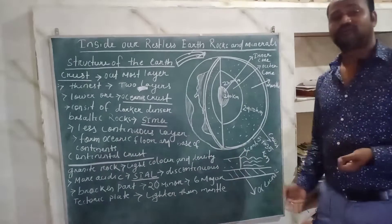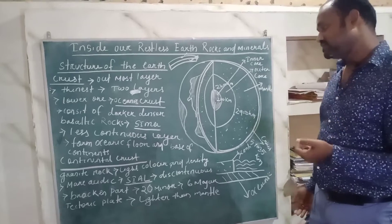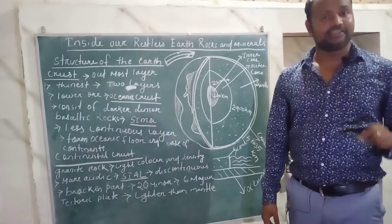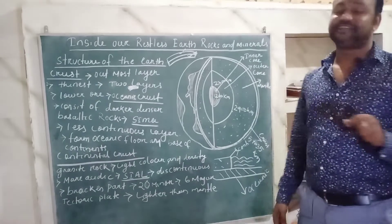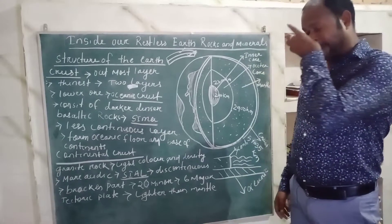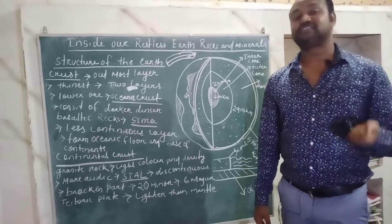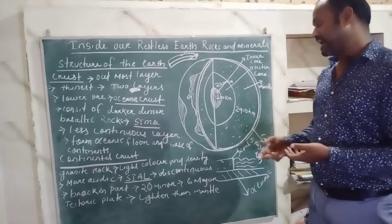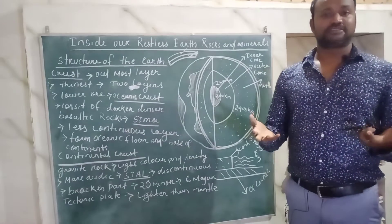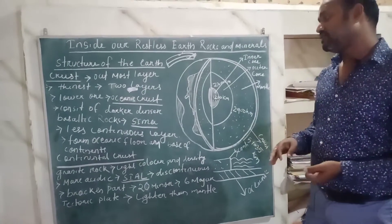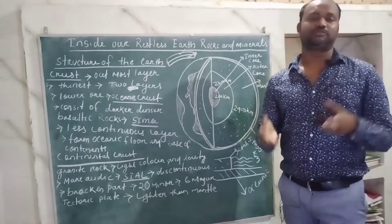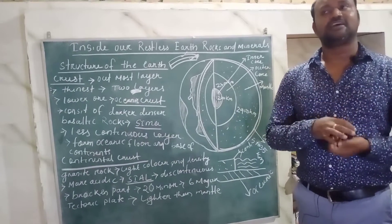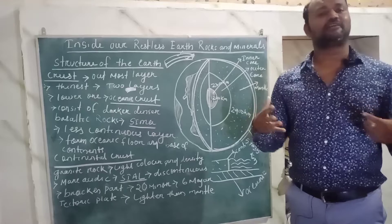The continental crust lies just above the oceanic crust. It is less dense, made up of lighter material, and mostly formed of igneous rock. It is mostly composed of silicon and aluminum — that is why it is also known as SIAL. It is discontinuous in nature.